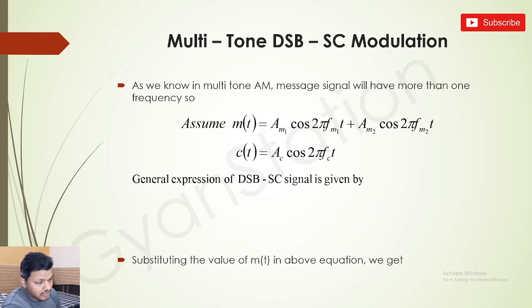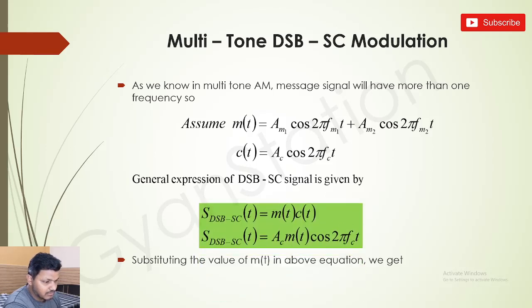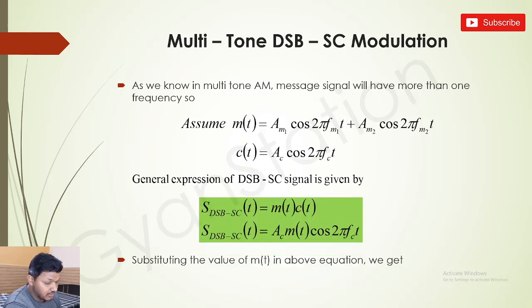So you should know the general expression of DSBSC by now. The general expression of DSBSC is c(t)·m(t), which is Ac·m(t)·cos(2π·fc·t). We will remember this as c(t)·m(t). Now we will substitute the value of m(t) into the general expression of DSBSC.